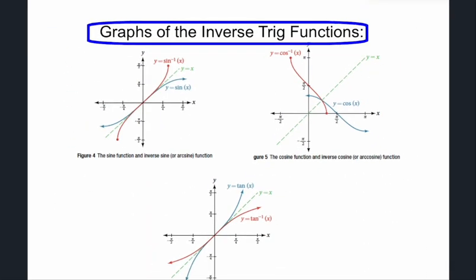I wanted you to see the graphs of our inverse functions. For it to be a function, we have to limit what quadrants we're in. Our sine function's wave will keep going and going, but if we restrict it — in this case from negative π/4 to positive π/4 — we only get one curve and keep it a function. Here's our cosine graph: the inverse goes across the line y = x, so the y's become x's and the x's become y's. And here's what an inverse tangent function looks like.